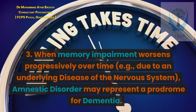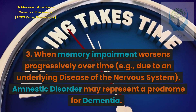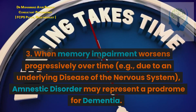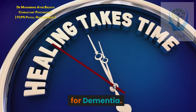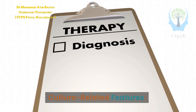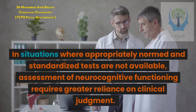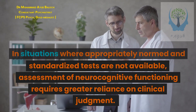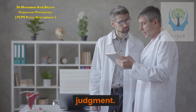3. When memory impairment worsens progressively over time, for example due to an underlying disease of the nervous system, amnestic disorder may represent a prodrome for dementia. Culture-related features: In situations where appropriately normed and standardized tests are not available, assessment of neurocognitive functioning requires greater reliance on clinical judgment.